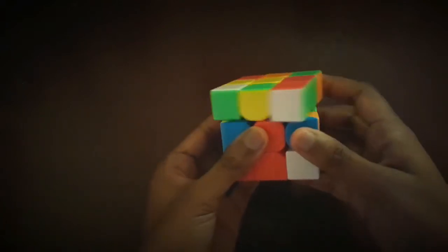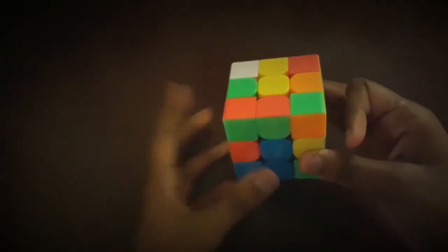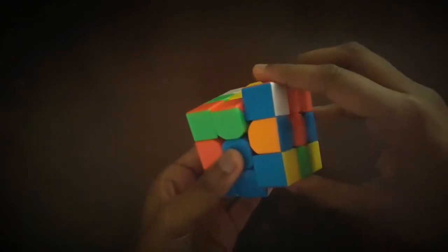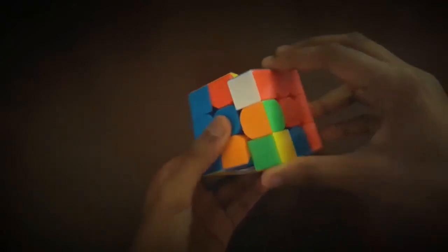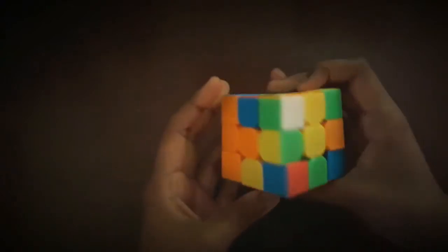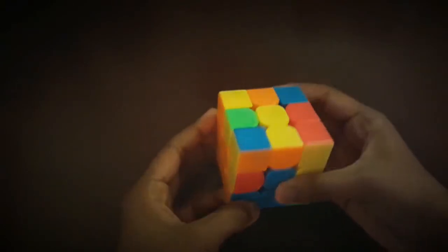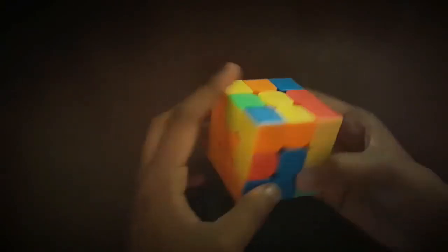However, as this is rotationless solving, I'd put the piece in at the front and then do an R2 F R F prime R and then the pair would be solved. The next pair is pretty straightforward.